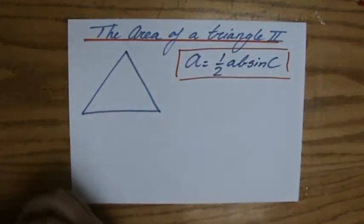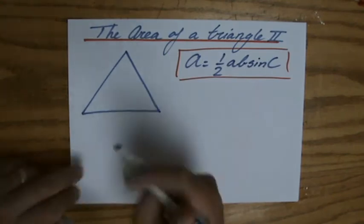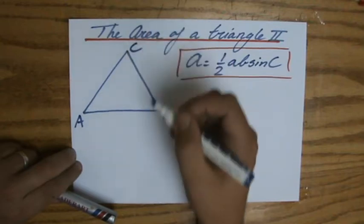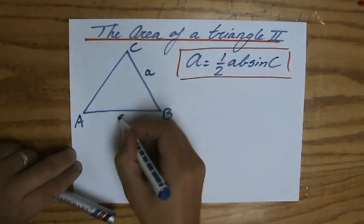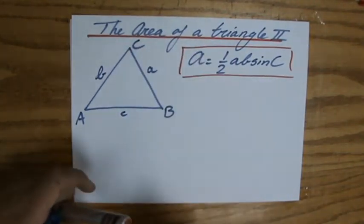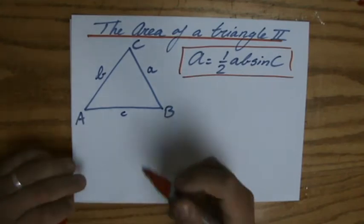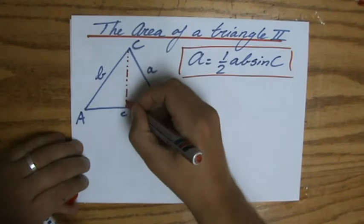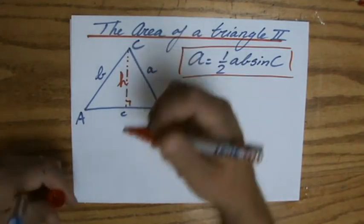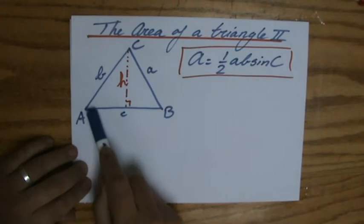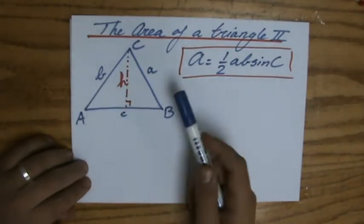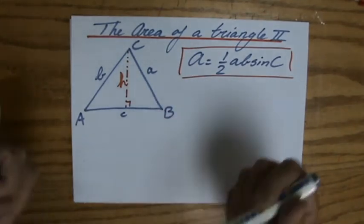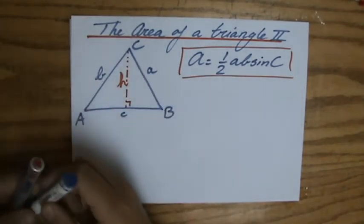So here we have a non-right-angle triangle, and let me just name my vertices ABC capitals, and then their sides lowercase abc. Now, usually you would have to do, if that is the height, you would say it's C times H divided by two. That would be the area of a triangle normally.